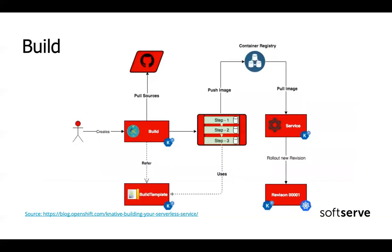Some fancy graph from OpenShift — this is the end-to-end graph of how to use Serving including Build. As you can see here, we just create an image, then deploy it, push it somewhere, because Knative supports pushing images to some external registry. And then using native Kubernetes things like services, we just deploy it and it works.